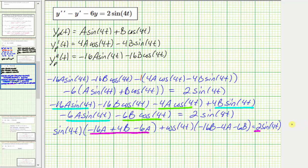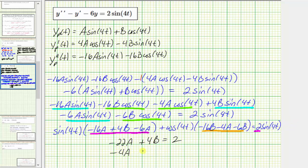And because there's no cosine four t term on the right, that quantity must equal zero. This is called equating the coefficients. Combining like terms inside the parentheses: negative twenty-two A plus four B equals positive two. Combining like terms in the cosine expression: negative four A minus twenty-two B equals zero.